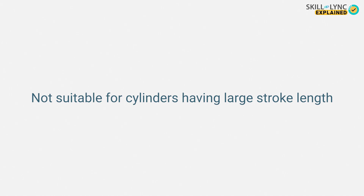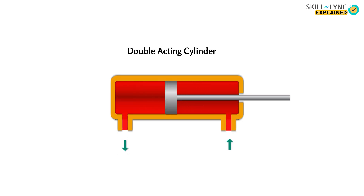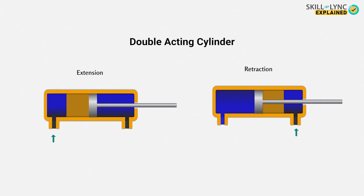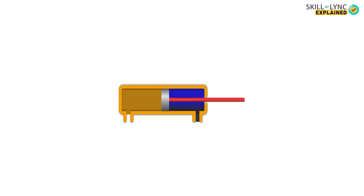Because of this, single acting cylinders are not used in applications with large stroke lengths. To overcome this drawback, there is another type called the double acting cylinder. Double acting cylinders can be actuated in both directions hydraulically. As opposed to single acting cylinders, the double acting cylinder has two ports — one for extension and the other for retraction.